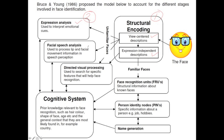There is also focus on the lips and what is being said — that is, if anything is actually being said. This is what we call facial speech analysis. Additionally, particular characteristics of the face are noticed; for example, is the person wearing glasses? This is going on inside the directed visual processing area.